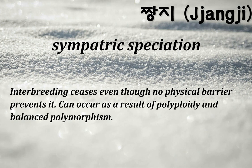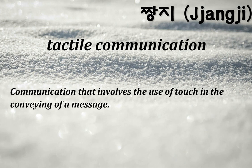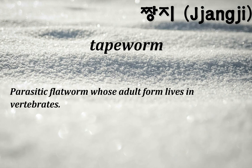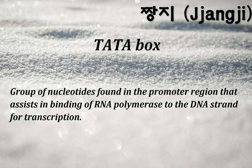Sympatric speciation: inbreeding ceases even though no physical barrier prevents it; can occur as a result of polyploidy and balanced polymorphism. Symplast pathway: movement of water and nutrients through the living portion of plant cells. Tactile communication: communication that involves the use of touch in conveying a message. Tapeworm: a parasitic flatworm whose adult form lives in vertebrates.